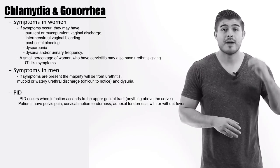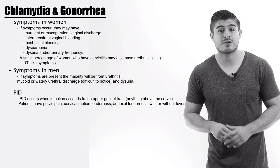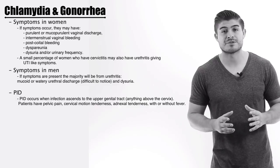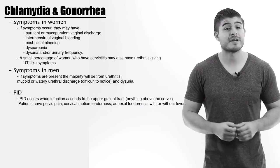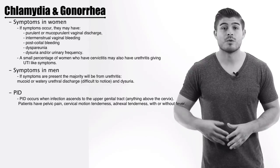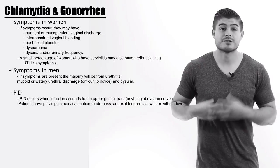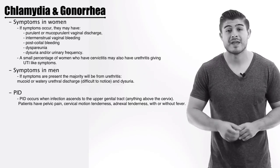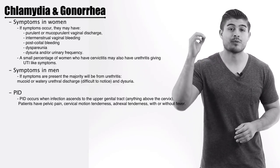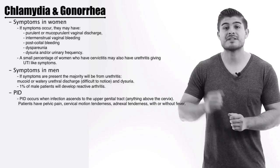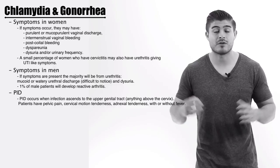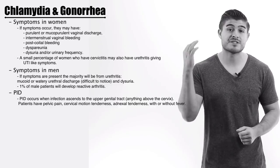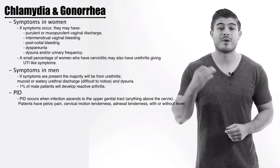We can also have perihepatitis, also called Fitzhugh-Curtis syndrome — inflammation of the liver capsule secondary to Chlamydia infection — and patients will present with right upper quadrant pain. In males, about 1% can develop reactive arthritis, with arthralgias and arthritis secondary to Chlamydia or Gonorrhea.